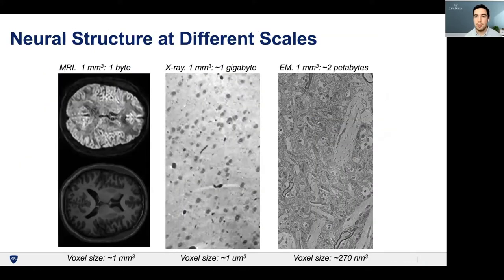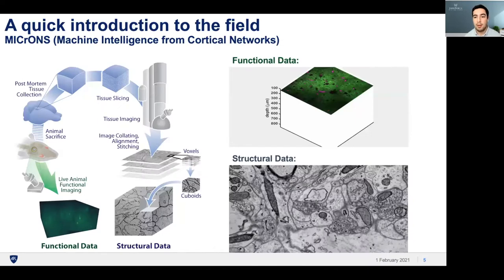We look at three different scales of data. Moving from left to right, we have data covering six orders of magnitude from the macroscale, which is in the millimeter range, to the nanoscale, which is in the nanometer range. It's worth noting how one cubic millimeter of MRI data is just one byte, but in electron microscopy the same cubic millimeter would require two petabytes to store. One major source of this data for connectomics comes from the Microns program, which successfully imaged one cubic millimeter of mouse cortex in electron microscopy.